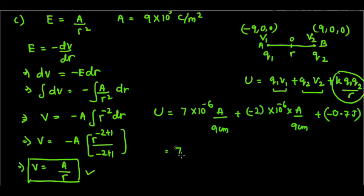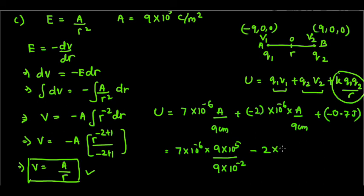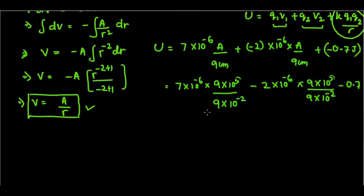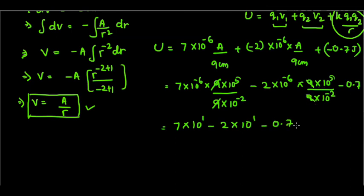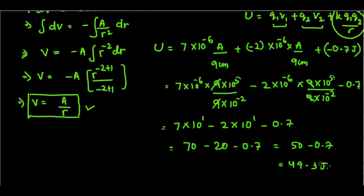Substituting: U = 7×10⁻⁶ × (9×10⁵) / (9×10⁻²) + (minus 2×10⁻⁶) × (9×10⁵) / (9×10⁻²) + (minus 0.7). The 9s cancel in both terms, giving 7×10⁻⁶⁺⁵⁺² + (minus 2)×10¹ minus 0.7 = 70 minus 20 minus 0.7 = 50 minus 0.7 = 49.3 joules.